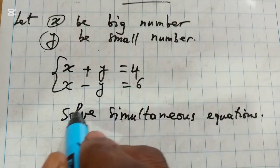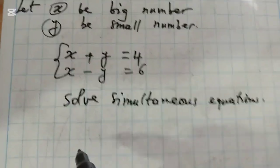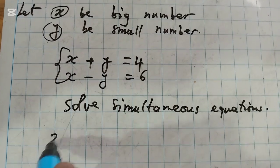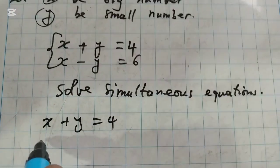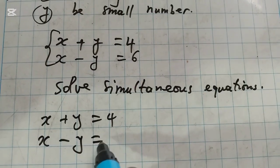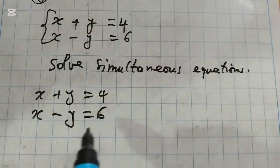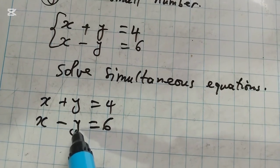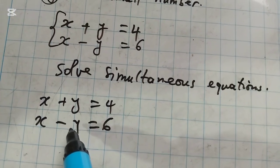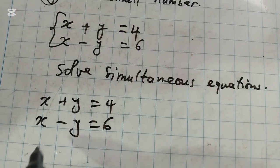Now, since we have X plus Y equals 4 and X minus Y equals 6, you can see here we have Y and also negative Y. So there's nothing else to do rather than simplifying these.